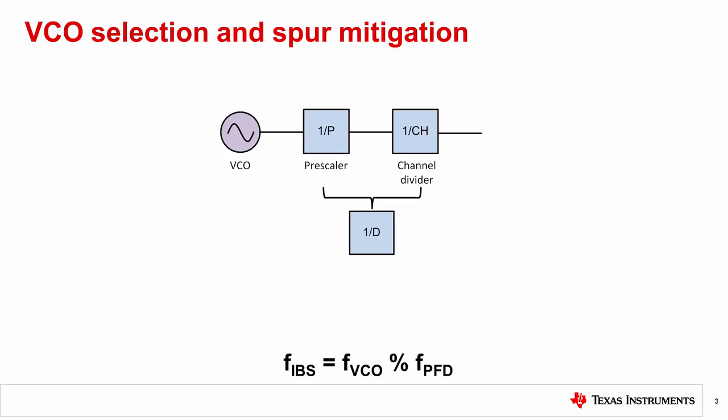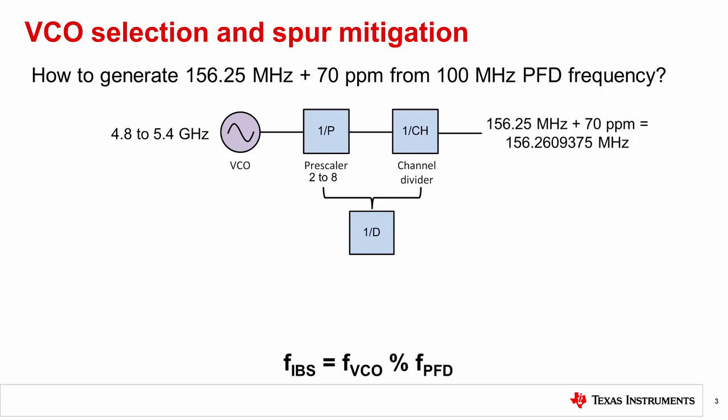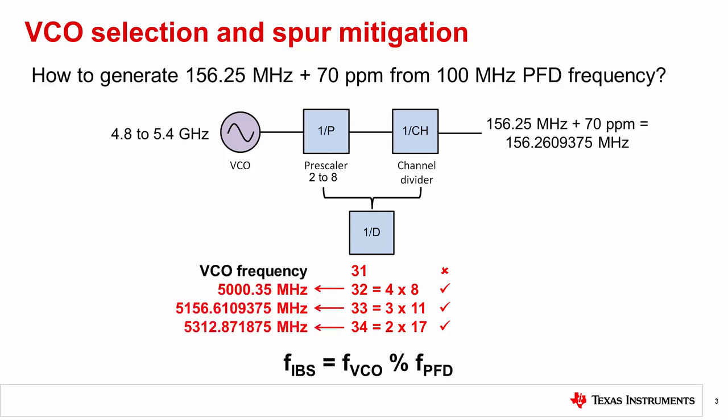Before going to the example, let us first learn more about output dividers. An output divider usually consists of a pre-scaler and a channel divider. The total division value is the product of the two. For this example, the pre-scaler value can be any integer from 2 to 8. Now think about this problem: how should we generate 156.25 MHz plus 70 PPM from a 100 MHz phase detector frequency? The VCO frequency range is from 4.8 to 5.4 GHz. Four output divider values are possible, but 31 cannot be implemented because it is not divisible by any pre-scaler value. VCO frequency can be calculated by multiplying the output frequency with the output divider value, and integer boundary spur frequencies can be calculated by the equation at the bottom.